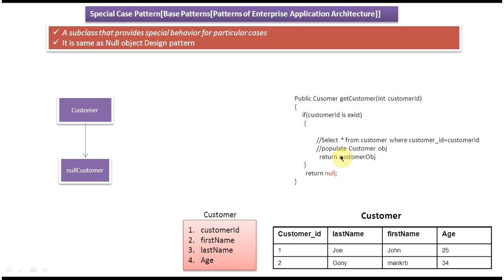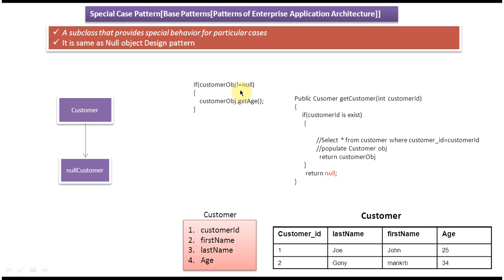If the customer ID is not there — for example, instead of passing 1 or 2, suppose the user passes 10, which is not in the customer table — the method will return null. So if the customer ID exists it returns the customer object; otherwise it returns null. In that case, the caller must do a null check: if customer object is not equal to null, then call customer object dot getAge, and so on.